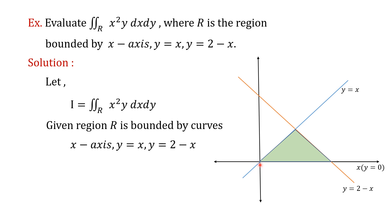Now we obtain the points of intersection. The origin (0, 0), the point (1, 1) obtained by solving the equations of the two lines simultaneously, and the point (2, 0). Now, the limits depend on which strip we consider. We will first consider a line through the point (1, 1) parallel to the y-axis — its equation is x equal to 1.